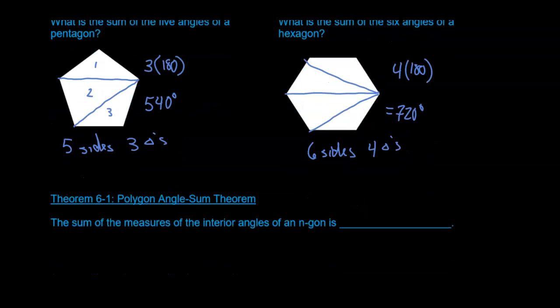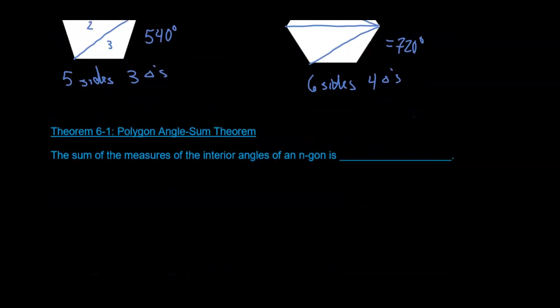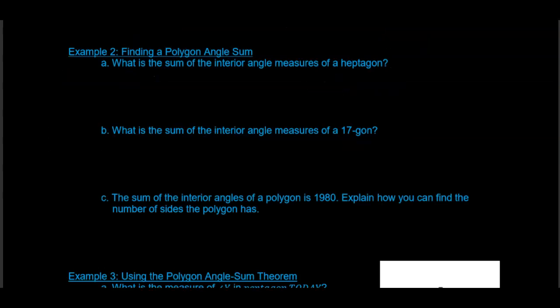Which brings us to the polygon angle sum theorem. The polygon angle sum theorem says the sum of the measures of the interior angles of an n-agon — where n is the number of sides — is (n minus 2) times 180. That will give us the measure of the interior angles of any polygon.